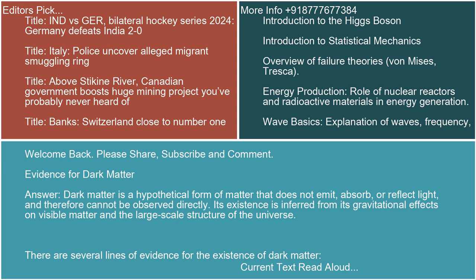Evidence for Dark Matter. Dark matter is a hypothetical form of matter that does not emit, absorb, or reflect light, and therefore cannot be observed directly. Its existence is inferred from its gravitational effects on visible matter and the large-scale structure of the universe.